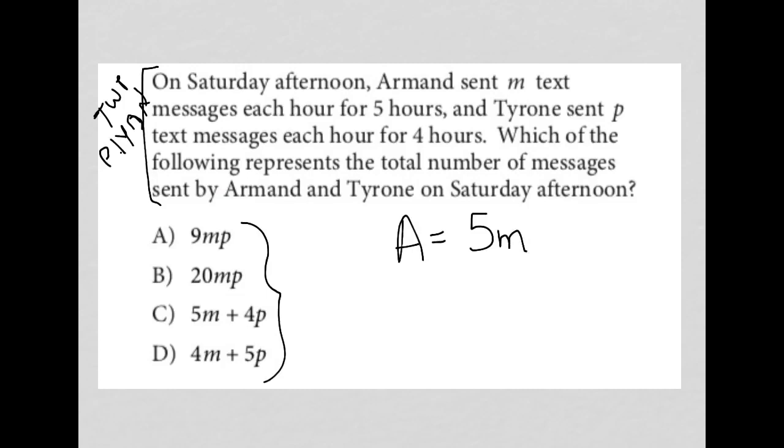5M because he sent M text messages each hour for five hours. So that means Armand sent five times M text messages. And Tyrone sent P text messages each hour for four hours. So I'm going to say T equals 4P for the same reason as what I wrote down for Armand.